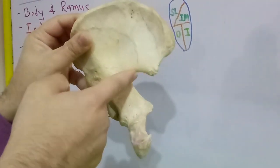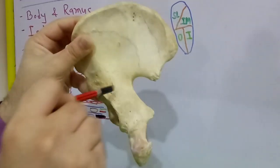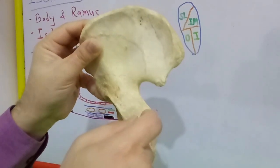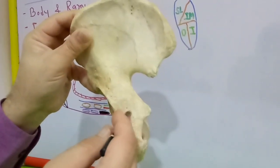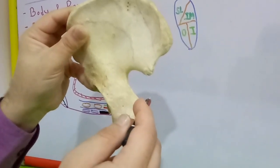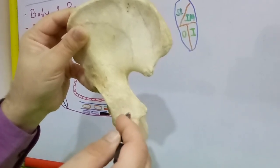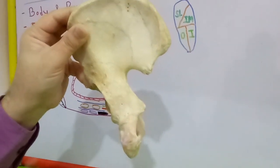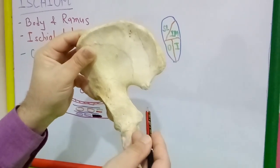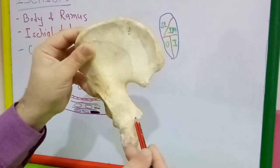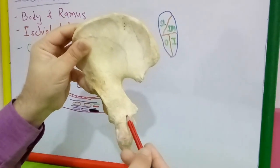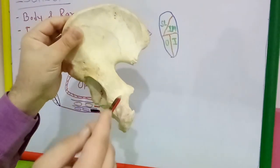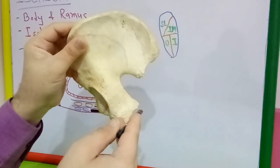There is a small gap above piriformis through which the superior gluteal nerve and superior gluteal vessels come out. There is a small gap below piriformis through which the sciatic nerve, posterior cutaneous nerve of the thigh, pudendal nerve, internal pudendal vessels, nerve to obturator internus, and nerve to quadratus femoris all exit via the greater sciatic notch below piriformis. Out of these, the pudendal nerve, internal pudendal vessels, and the nerve to obturator internus pass via the lesser sciatic notch and enter into the perineum. We must know the various structures passing through the greater sciatic notch and the lesser sciatic notch.